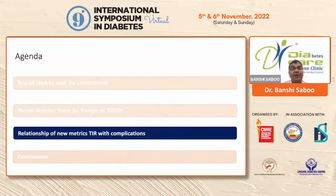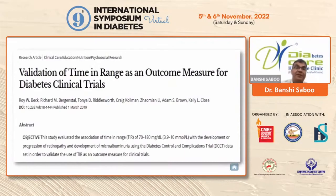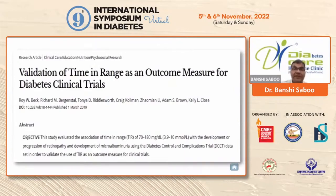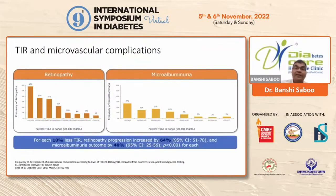In scientific meetings, we wanted to know whether this new metric — time in range — is correlated with complications, since we have a lot of study data with A1C. A paper published in Diabetes Care in 2019 validated time in range as an outcome measure for diabetes clinical trials. It showed a strong association between time in range and the risk of microvascular complications — when a person's time in range is better, there are fewer microvascular complications, including less retinopathy and microalbuminuria.